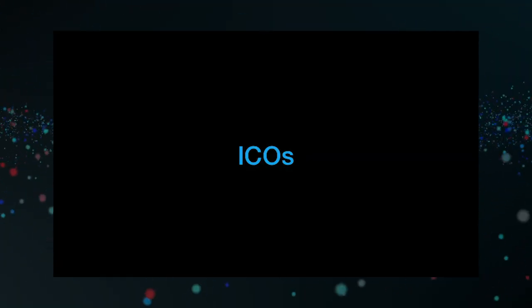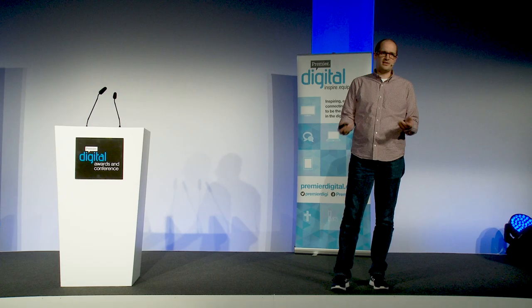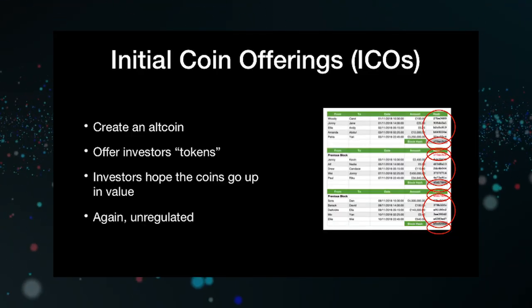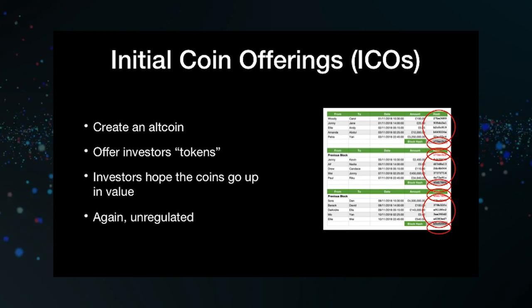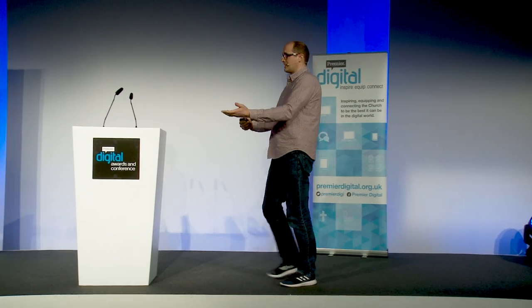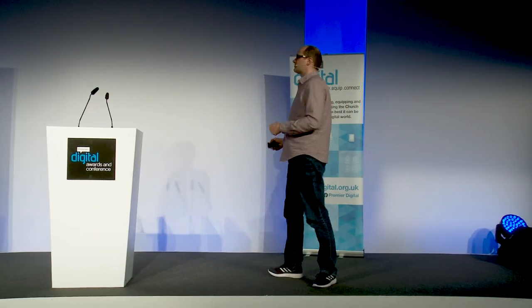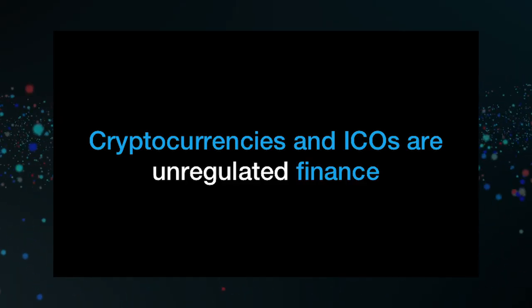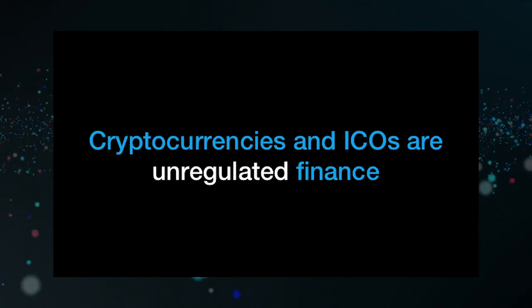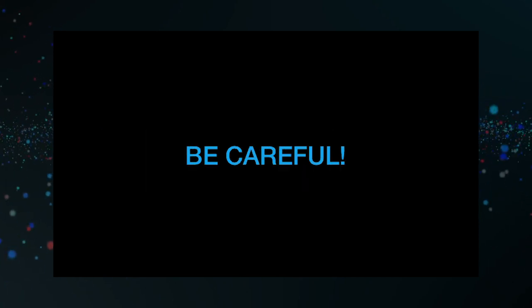The bitcoin mining lottery is called proof of work; some use proof of stake. There are also ICOs — Initial Coin Offerings. When you create an altcoin you can offer investors tokens, essentially like a bitcoin, and investors hope they go up in value. It's unregulated — don't put money into an ICO unless you absolutely know it'll go up, which it won't. Cryptocurrencies and ICOs are unregulated; you'll pretty much never get your money back.